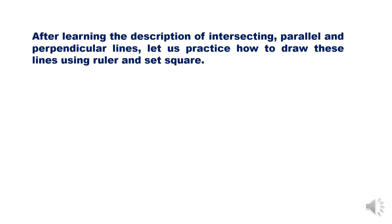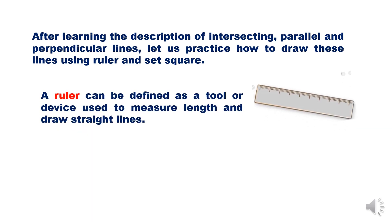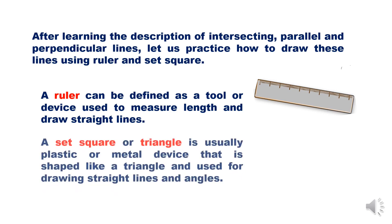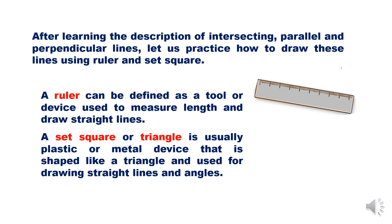After learning the description of intersecting, parallel, and perpendicular lines, let us practice how to draw these lines using a ruler and set square. A ruler can be defined as a tool or device used to measure length and draw straight lines. A set square or triangle is usually a plastic or metal device that is shaped like a triangle and used for drawing straight lines and angles.